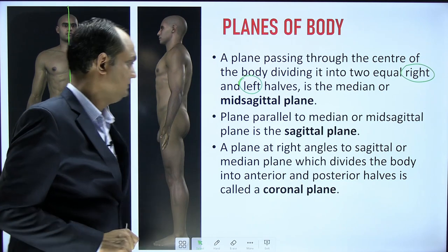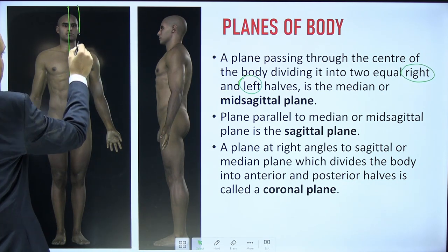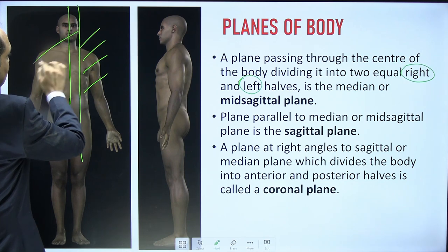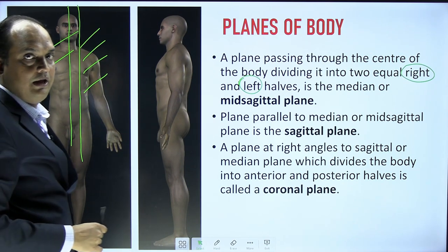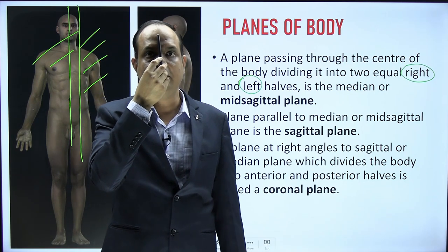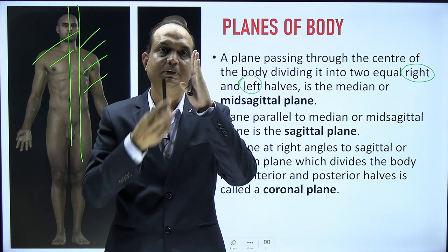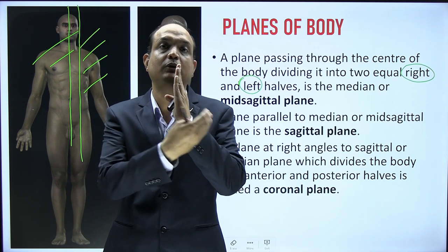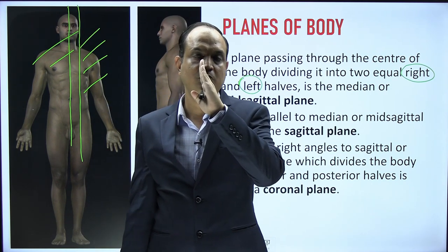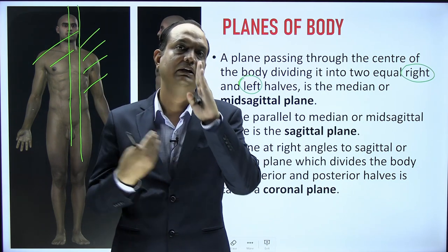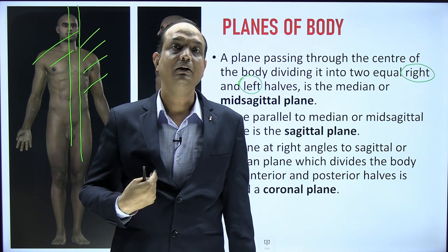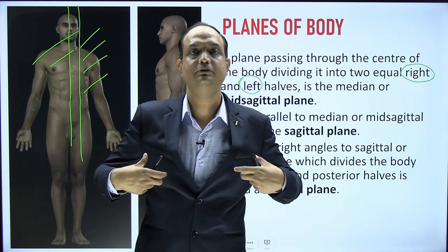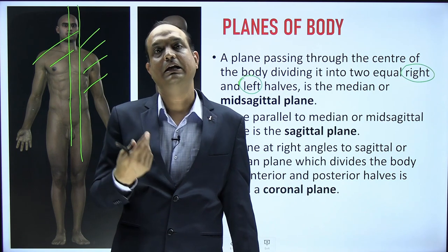The sagittal plane is any plane parallel to the mid-sagittal plane. It still divides the body into right and left sides, but those two areas are not equal. If the plane passes through the midline producing equal halves, it is the mid-sagittal plane. If the plane is vertical and divides the body into unequal right and left parts, it is the sagittal plane.